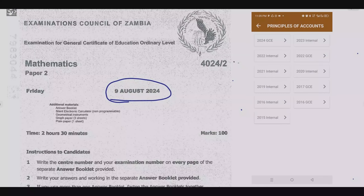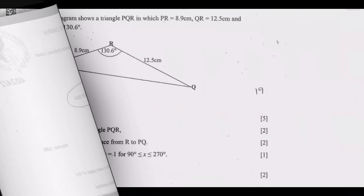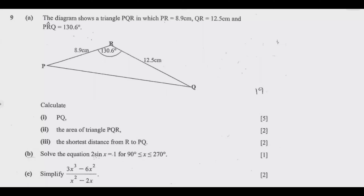Let us look at Question 9. The diagram shows a triangle PQR in which PR equals 8.9 cm, QR equals 12.5 cm, and angle PRQ equals 130.6 degrees. Calculate: part (i) PQ, part (ii) the area of triangle PQR, and part (iii) the shortest distance from R to PQ.